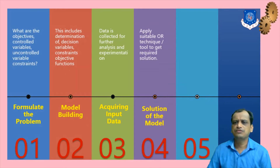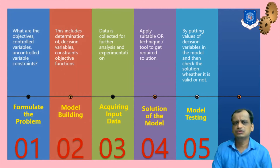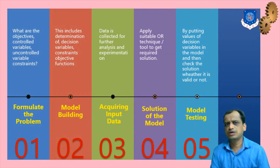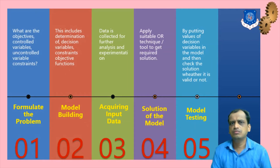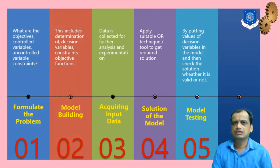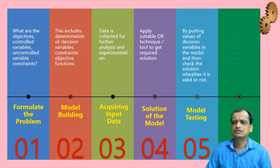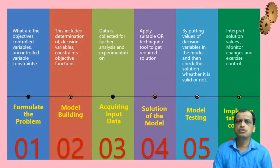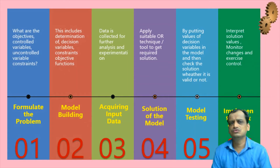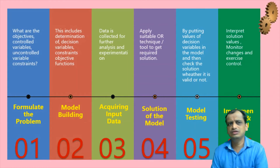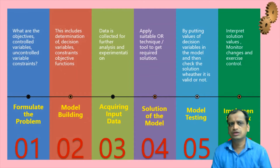The fifth phase is model testing. Once you have arrived at solutions, you validate the model. Just as in engineering processes you test a prototype, here you test whether the mathematical model and its solutions are correct. Finally, the sixth phase is implementation and control. Once you have consistent solutions, you implement them in day-to-day scenarios, monitor the variables to see if they are in control or out of control, and continuously try to improve upon the solution. That completes the cycle of operations research methodology phases.